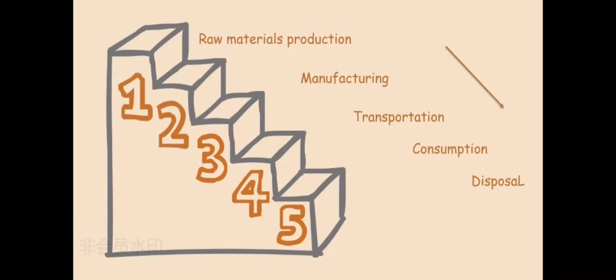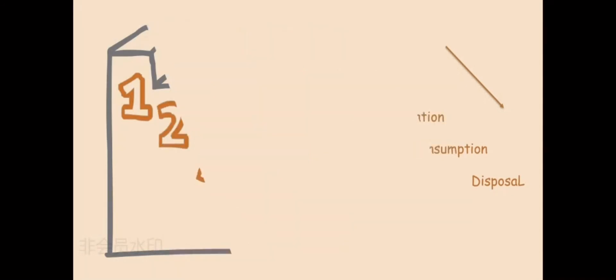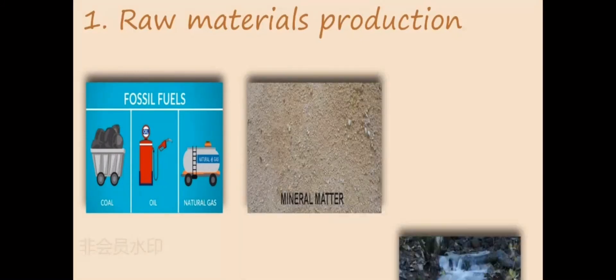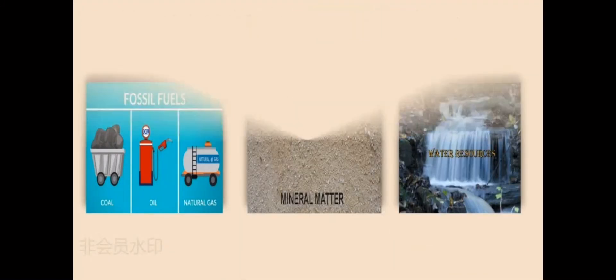The raw material production process will need to use fossil fuels, minerals, water, farming, seeding, and harvesting.